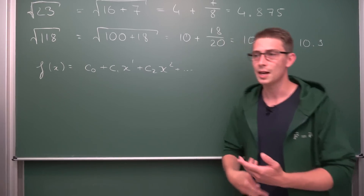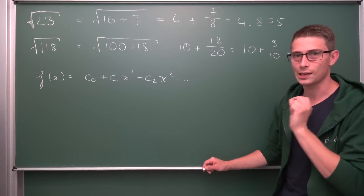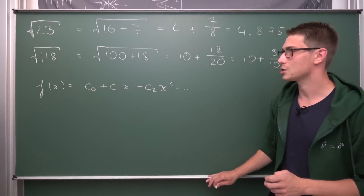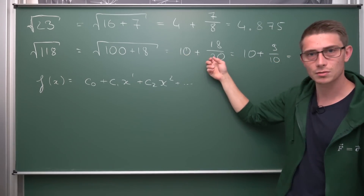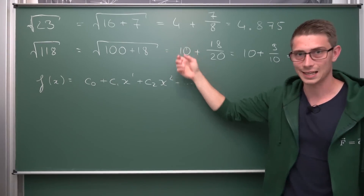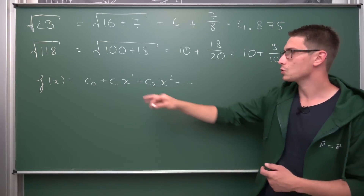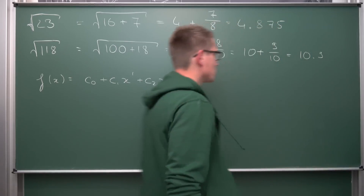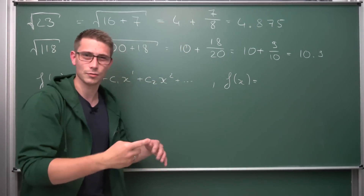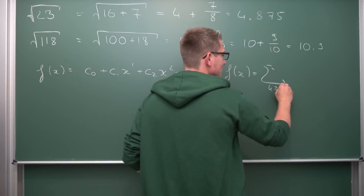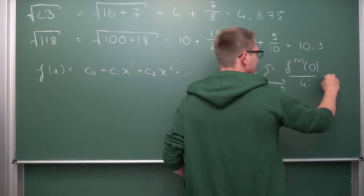You can find the coefficients by differentiating your function and solving an initial value problem at x equals zero. We are going to look at the linear approximation — the Taylor series cut off after the first term — which gives a linear approximation. The Maclaurin series expansion is the infinite series from k equals zero to infinity of the k-th derivative of the function evaluated at zero, divided by k factorial, times x to the k-th power.